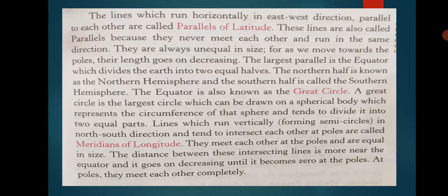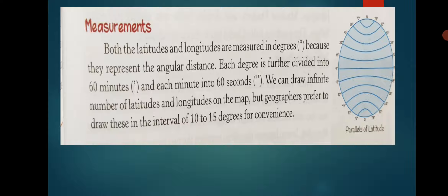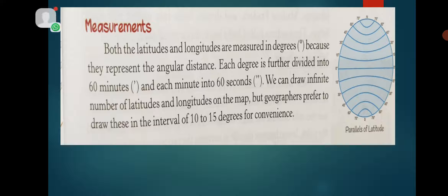Both latitudes and longitudes are measured in degrees because they represent angular distance. Each degree is further divided into 60 minutes and each minute into 60 seconds. We can draw an infinite number of latitudes and longitudes on the map, but geographers prefer to draw them at intervals of 10 to 50 degrees for convenience.